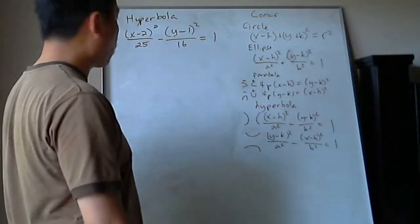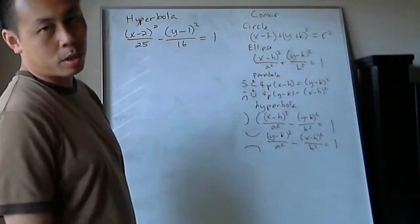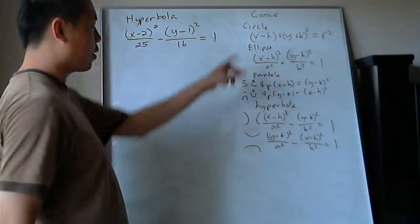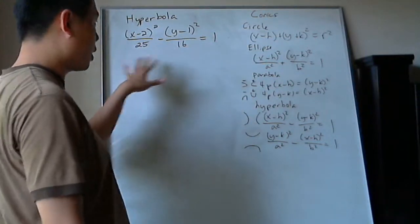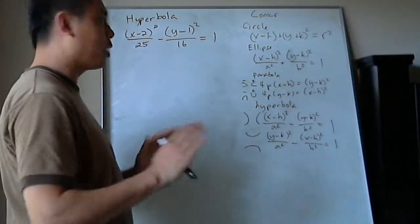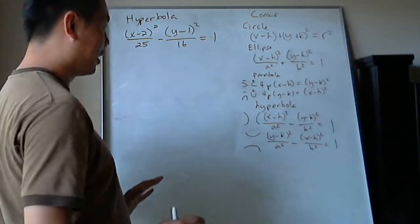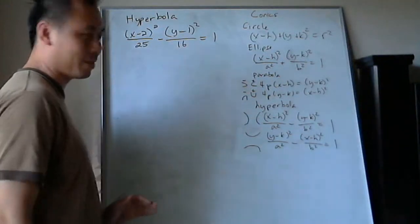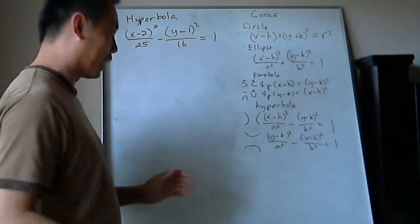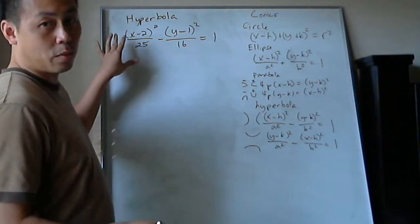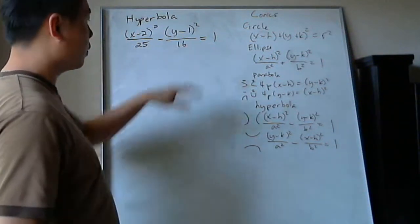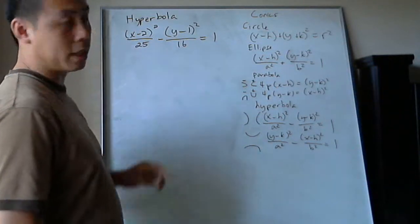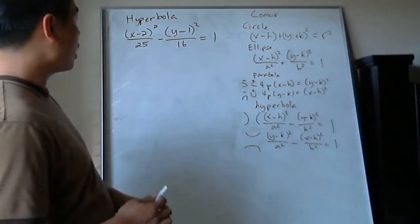We're going to get to the fourth conic, which is hyperbola, and I want to do it a little differently than the other three. With circle, ellipse, and parabola I chose a problem already in the format, because there's a lot of stuff to do in hyperbolas. Certain hyperbola problems can take you five to ten minutes if you know what you're doing, so I want to skip the completing-the-square steps and move right on to learning how to analyze and graph a hyperbola.